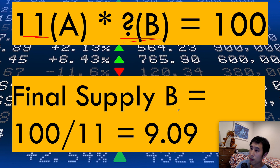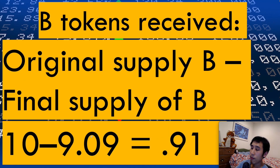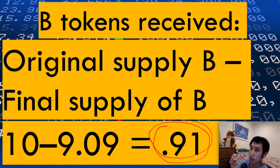This means that at the end of the swap, there are going to be 11 tokens of token A and 9.09 tokens of token B. If the original supply of token B is 10 and the final supply is 9.09, the DEX is going to give you 0.91 tokens of token B in exchange. To summarize: the DEX starts with 10 A and 10 B; a user trades one token A for 0.91 tokens of token B; and at the end, the DEX has 11 A and 9.09 B.